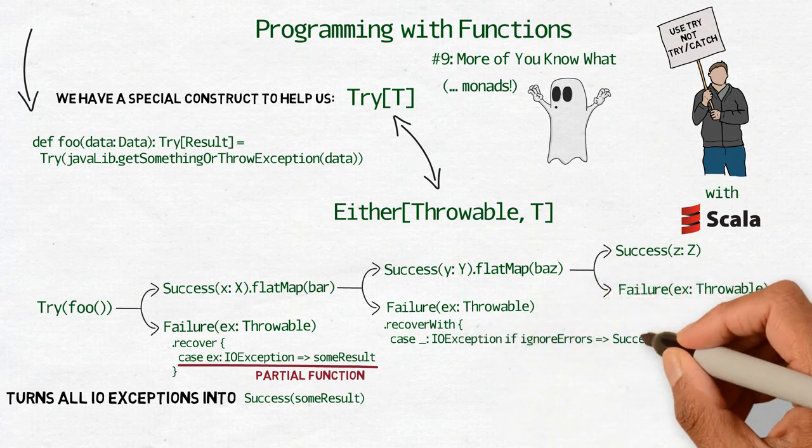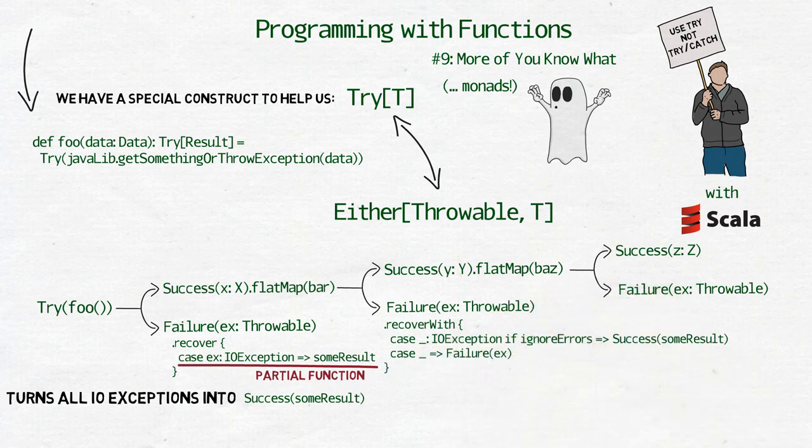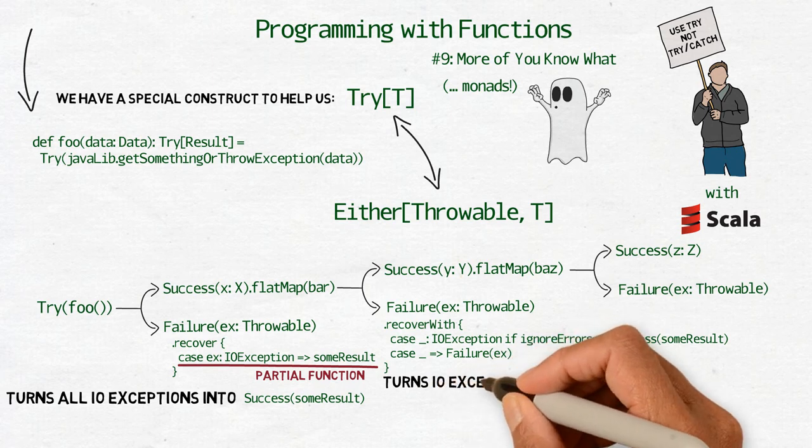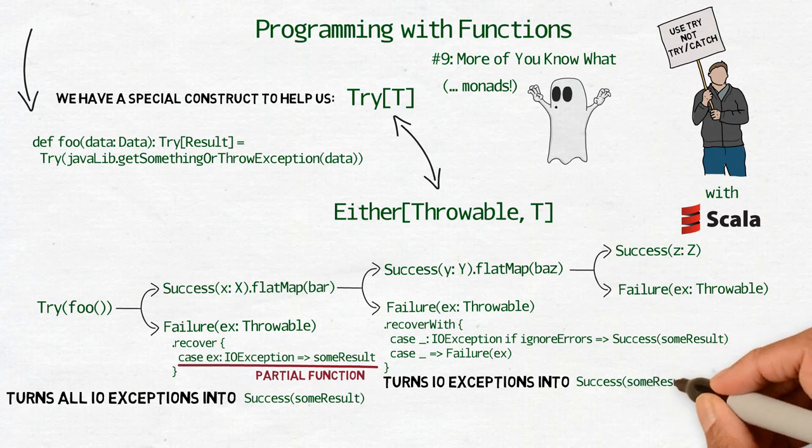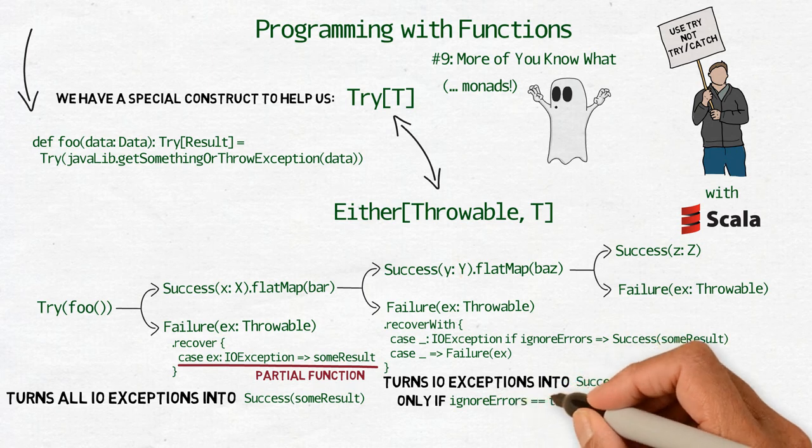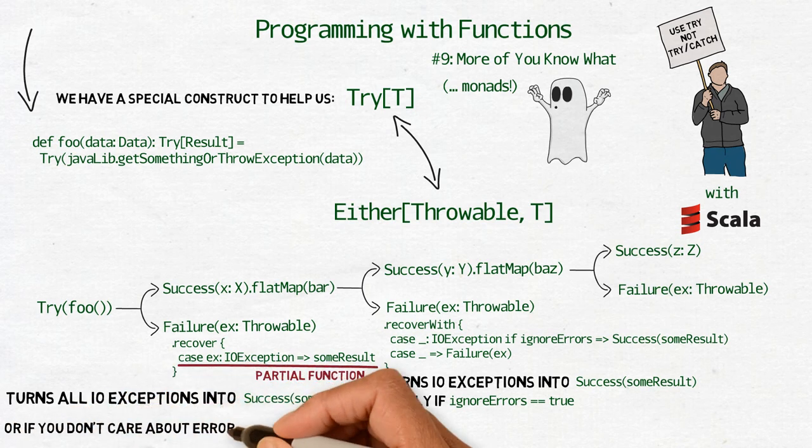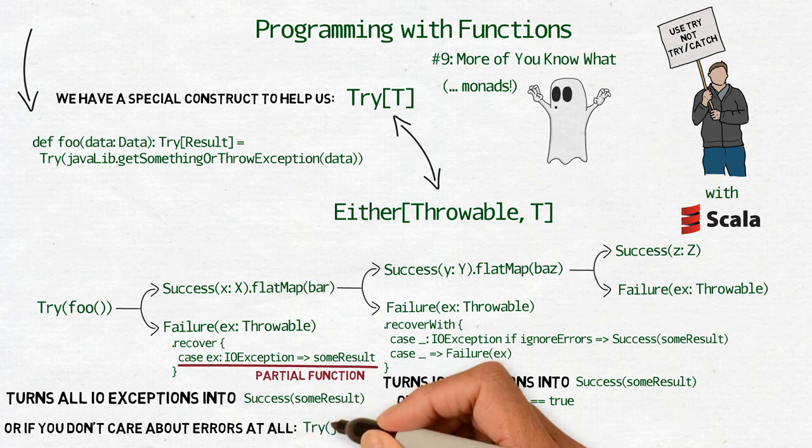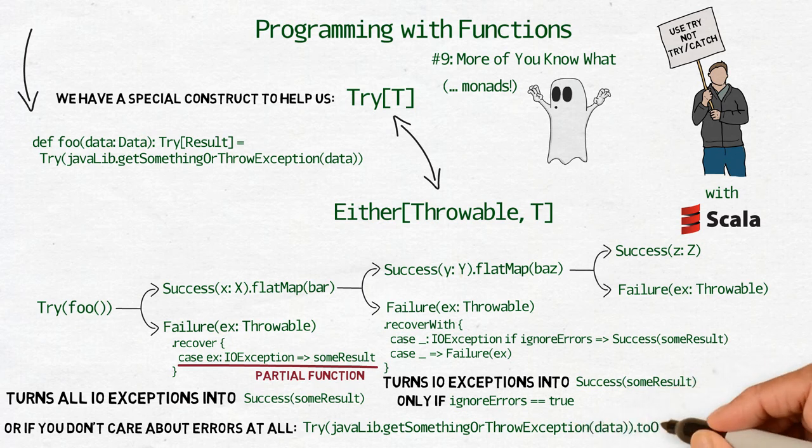For all other types of exceptions not supported by the partial function, the result will still be a failure. RecoverWith allows for more flexibility. It accepts a partial function which alone can decide if its result should be a success or a failure. You can imagine that recover is a map for exceptions, mapping them to results which are then wrapped in successful tries, while recoverWith is a flatmap. It flatmaps exceptions to successful or failed tries. On the other hand, if you don't care about errors at all and you only want to get the valid result from a method which can throw an exception, you can turn a try to an option. In short, always use try instead of try-catch clause.